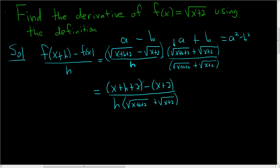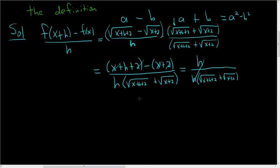What cancels? Looks like the 2's cancel, the x's cancel. So we're left with h all over h parentheses square root x plus h plus 2 plus square root x plus 2. And the h's cancel. So we end up with finally getting 1 over the square root of x plus h plus 2 plus the square root of x plus 2.